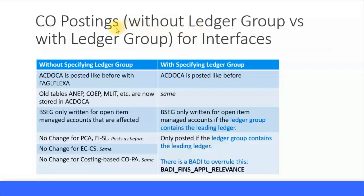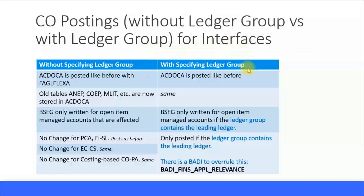Now let's look at how CO postings are done for interfaces — without specifying a ledger group and with specifying a ledger group. I have divided this into two columns for easy comparison. Without specifying a ledger group is the normal case, while specifying a ledger group is rare and applies only in certain instances.